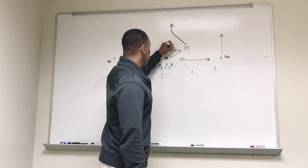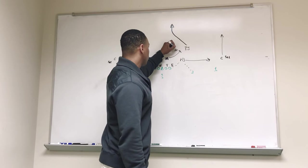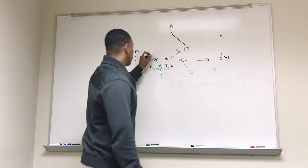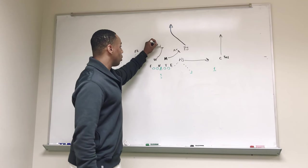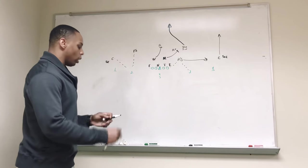12 yards deep, field is this way, we're to the hash. Our wheel backer is going to be our middle hole dropper, he's just going to drop straight back to 12, and then these two guys are going to take them out of the equation.